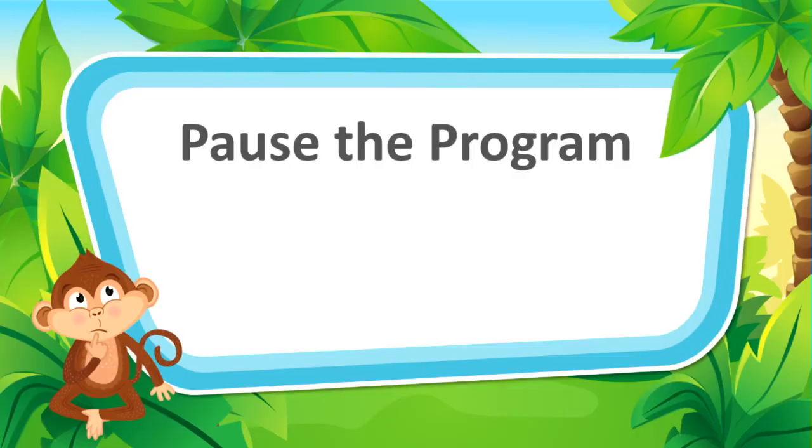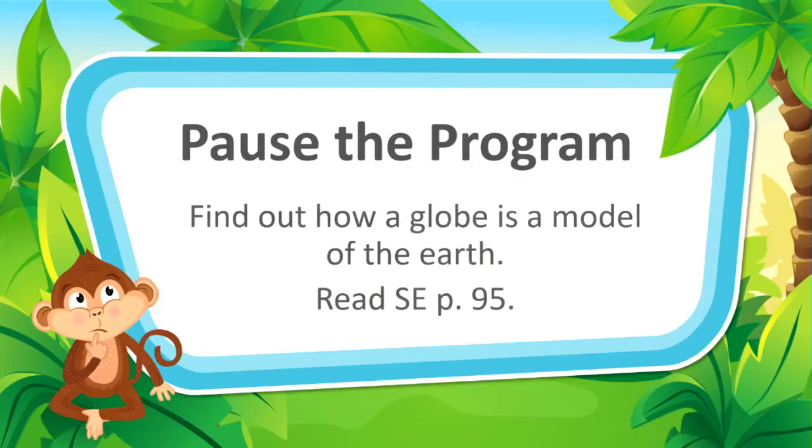Right now, as you read, I want you to find out how a globe is a model of the Earth. So when you go outside to play in your backyard, a park, a playground, or a field, what does the Earth look like from the ground? Well, it looks flat, because only a small part of the Earth's surface can be seen from the ground. Astronauts can see the whole Earth from space, and what does the Earth look like from space? It looks like a round ball.